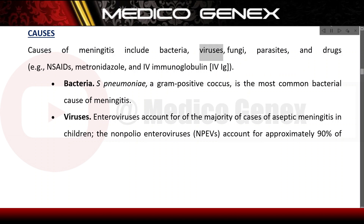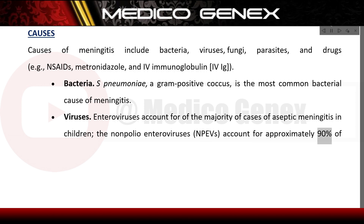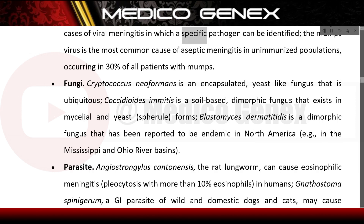Causes of meningitis include bacteria, viruses, fungi, parasites, and drugs such as NSAIDs, metronidazole, and intravenous immunoglobulin. S. pneumoniae, a gram-positive coccus, is the most common bacterial cause. Enteroviruses account for the majority of aseptic meningitis cases in children; non-polio enteroviruses account for approximately 90% of viral meningitis cases. The mumps virus is the most common cause in unimmunized populations, occurring in 30% of all mumps patients.